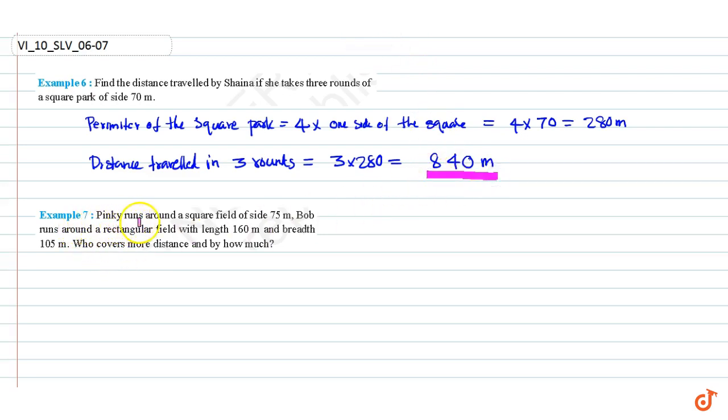Example 7: Ping runs around a square field of side 75 meters and Bob runs around a rectangular field with length 160 meters and breadth 105 meters. Who covers more distance and by how much?